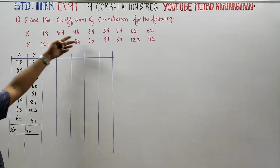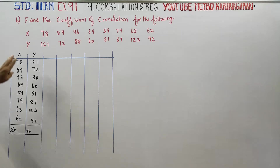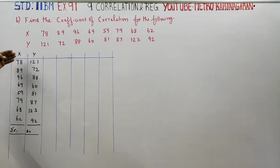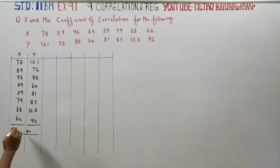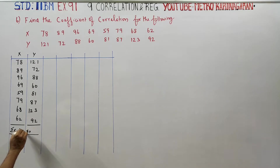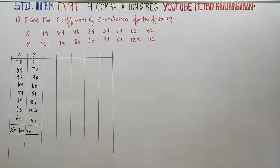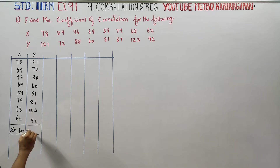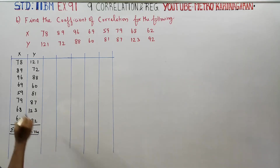For the XY values, X column and Y column — add them all up. You will be getting Sigma X is 600. After writing Sigma X, add the Y column and you are getting Sigma Y as 724.